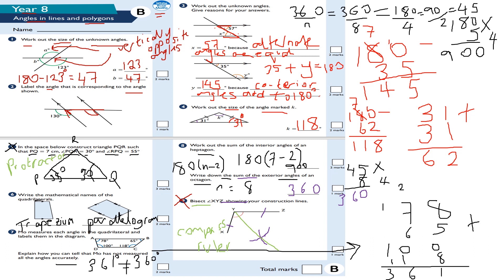So: measure over halfway with your compass, put a little arc there without changing it, then take your compass, put your point on the other arm, draw another arc so they cross, and where it crosses is where you draw your line. Use your ruler to connect Y to the intersection point. That's the process of angle bisection.